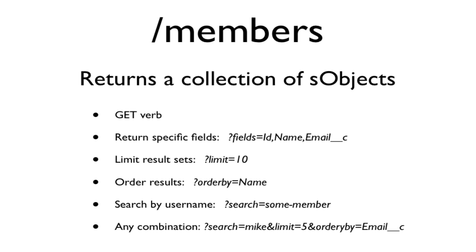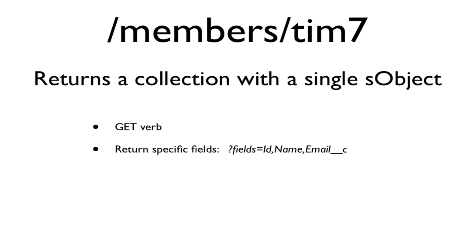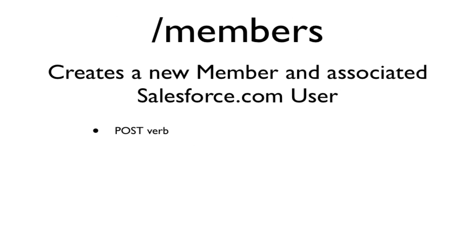That's our return for a selection of a set of members. We also want to be able to get a specific member. So if I go to slash member slash Tim7, it's going to return a collection with a single S object for that member, and we want to be able to specify the fields to be returned also. We also need a way to create records in Salesforce — so if I do a POST to slash members, it's going to take all the values passed in the request parameters and use those to create records in Salesforce.